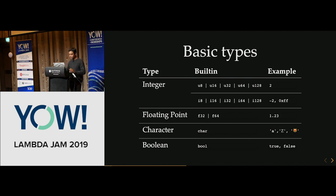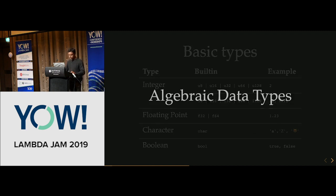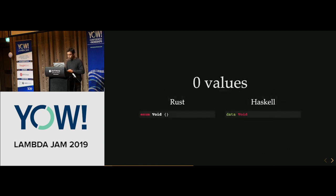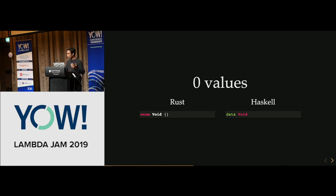Now let's look at functional programming aspects of Rust. Let's look at algebraic data types — how you can define your types and compose them. One way to look at types is by the number of inhabitants. In Rust you can create a type with no values using the enum keyword. Enum is like a data constructor in Haskell. You can define an enum type with no variants inside, so you cannot instantiate it. This is useful in special cases, like if you have a function that does not return.